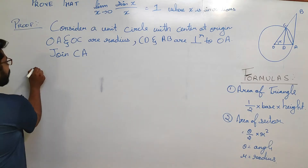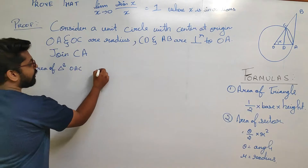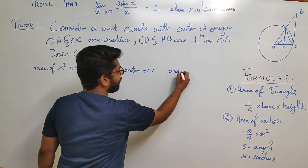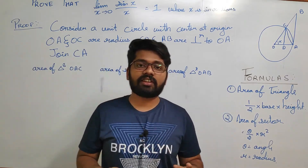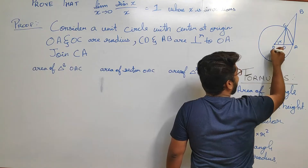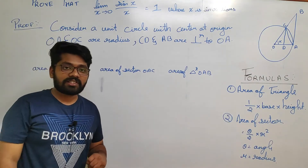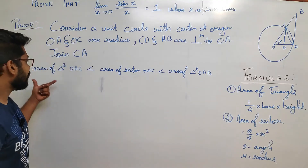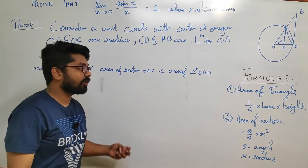We are going to consider three areas: area of triangle OAC, area of sector OAC, and area of triangle OAB. The relation between these areas is that from the diagram you can clearly observe: area of triangle OAC is less than area of sector OAC, which is less than area of triangle OAB.